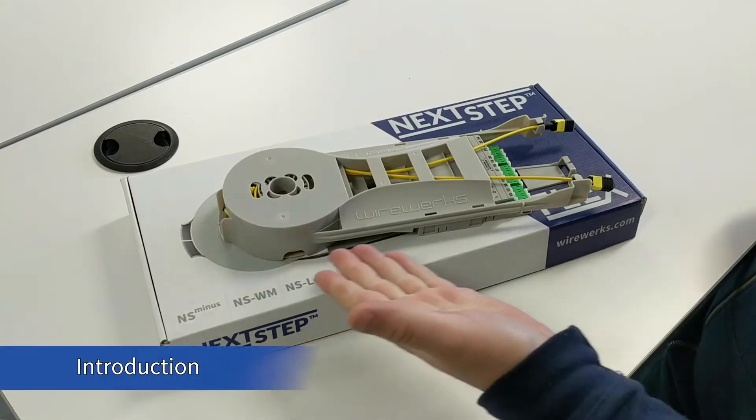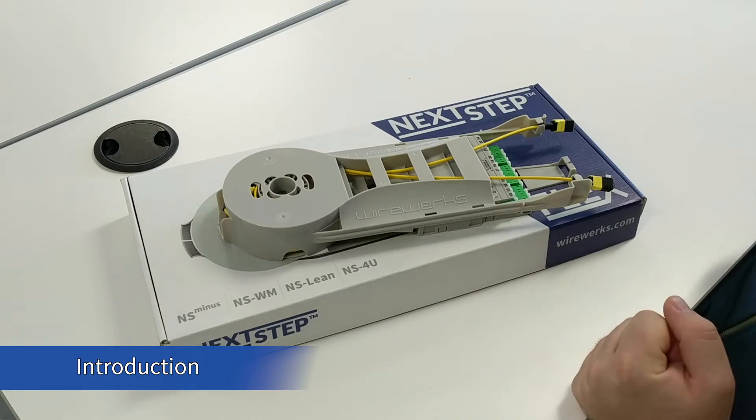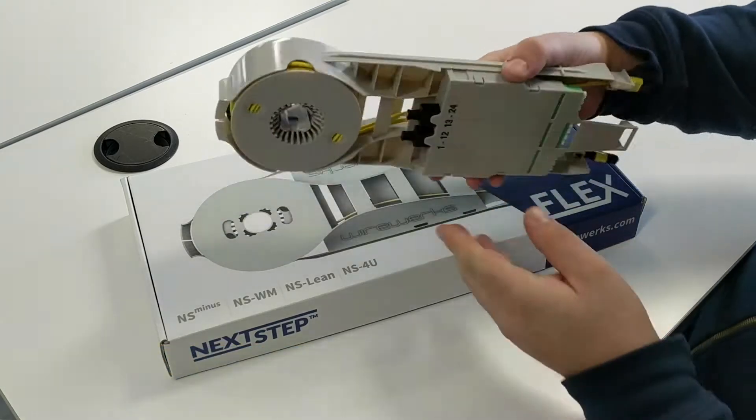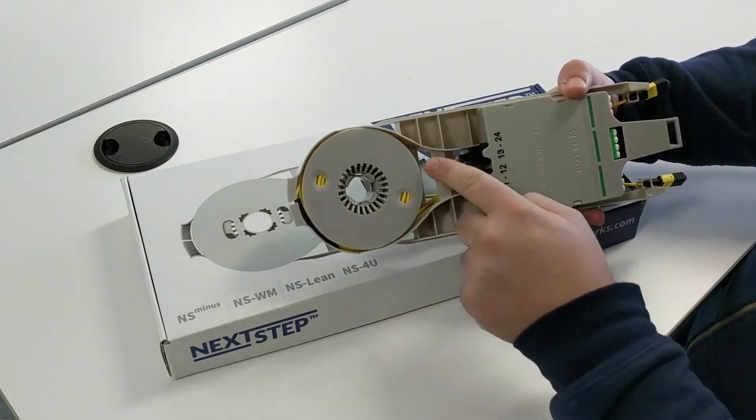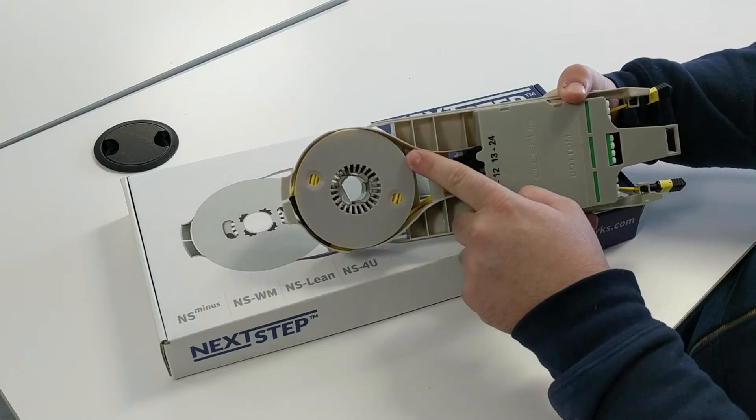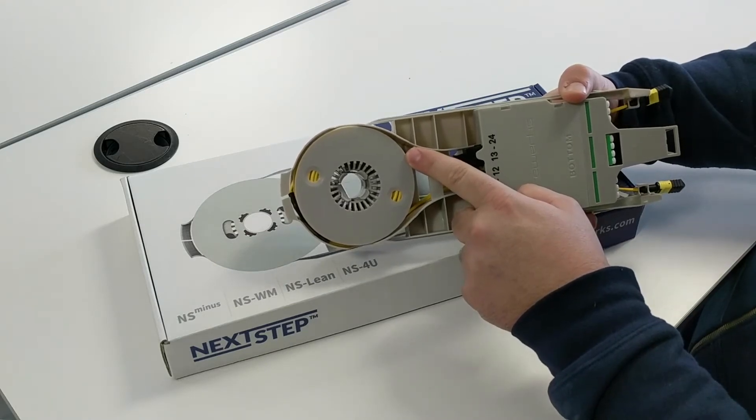Hello and welcome to the FlexModule installation video. The FlexModule comes with a 12-24 MPO to MPO cable assembly with up to 30 meters of trunk cable stored on its onboard spool.